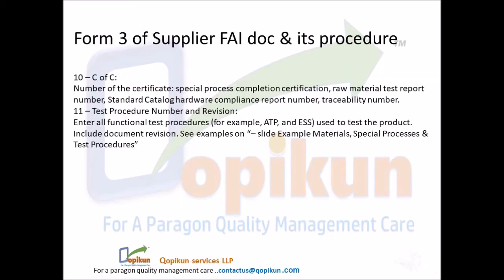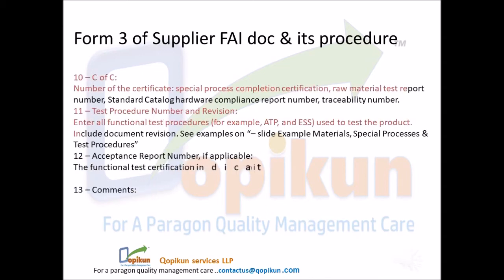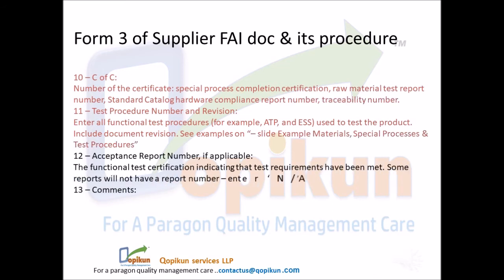Form 3 of supplier FAI DOC and its procedure. Field 10 — C of C: number of the certificate, special process completion certification, raw material test report number, standard catalog hardware compliance report number, or traceability number. Field 11 — test procedure number and revision: enter all functional test procedures, for example ATP and ESS, used to test the product; include document revision. Field 12 — acceptance report number: if applicable, the functional test certification indicating that test requirements have been met; if no report number, enter not applicable. Field 13 — comments: enter comments if necessary.